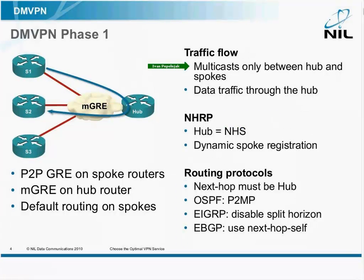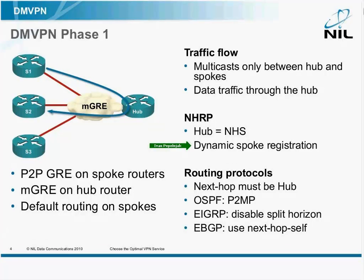Multicasts are exchanged only between the hub and the spokes. Routing updates, routing protocol hellos — everything flows only between the hub and the spokes. There is no spoke-to-spoke multicast. The hub also acts as an NHRP Next Hop server, so the spokes register with the hub, and the hub knows how to reach each individual spoke.